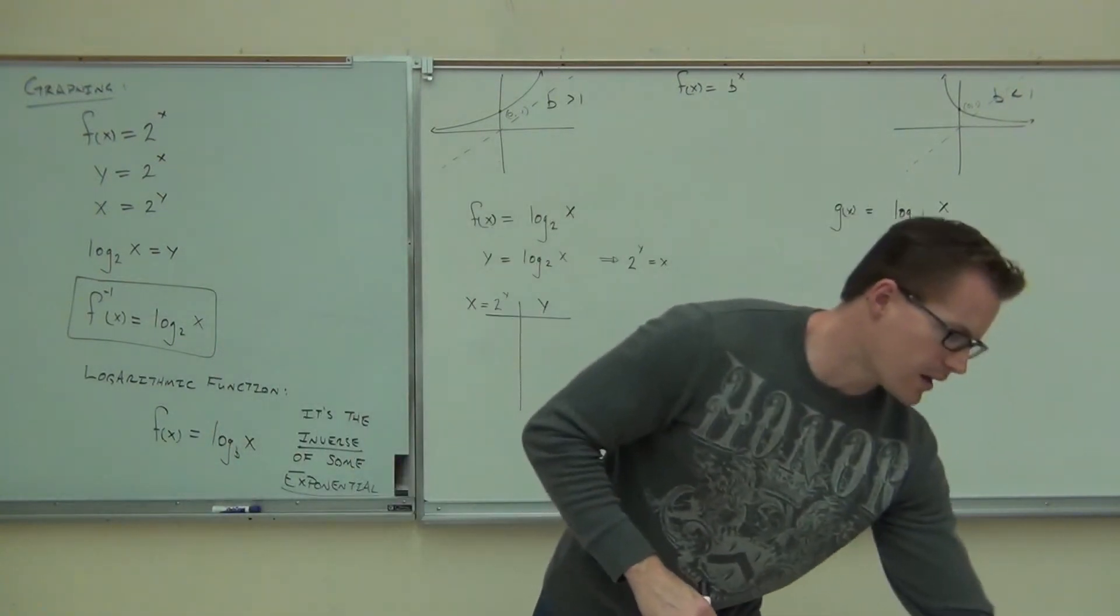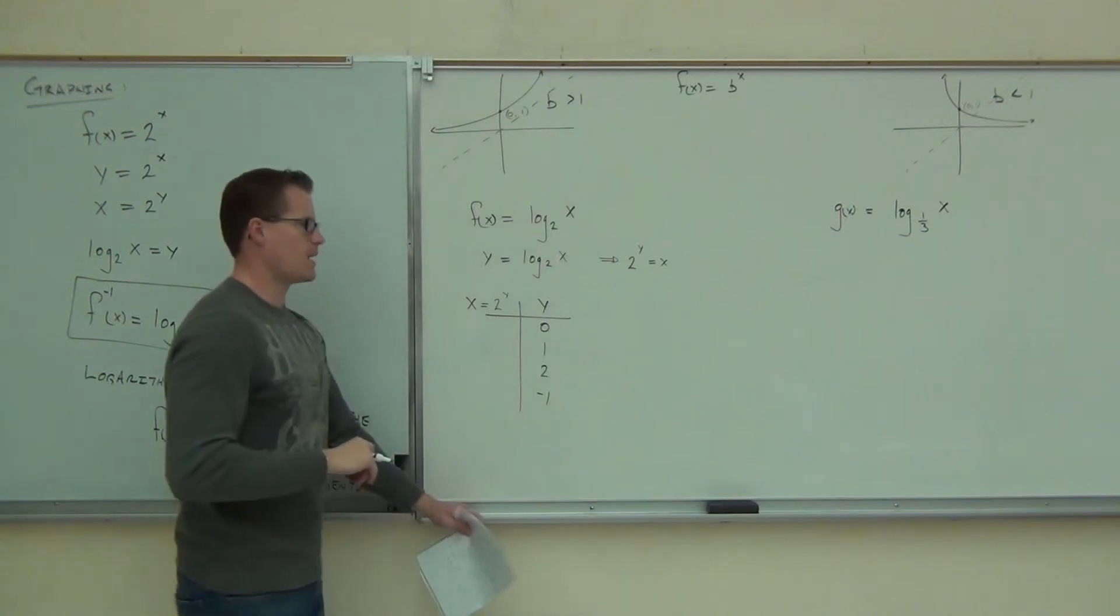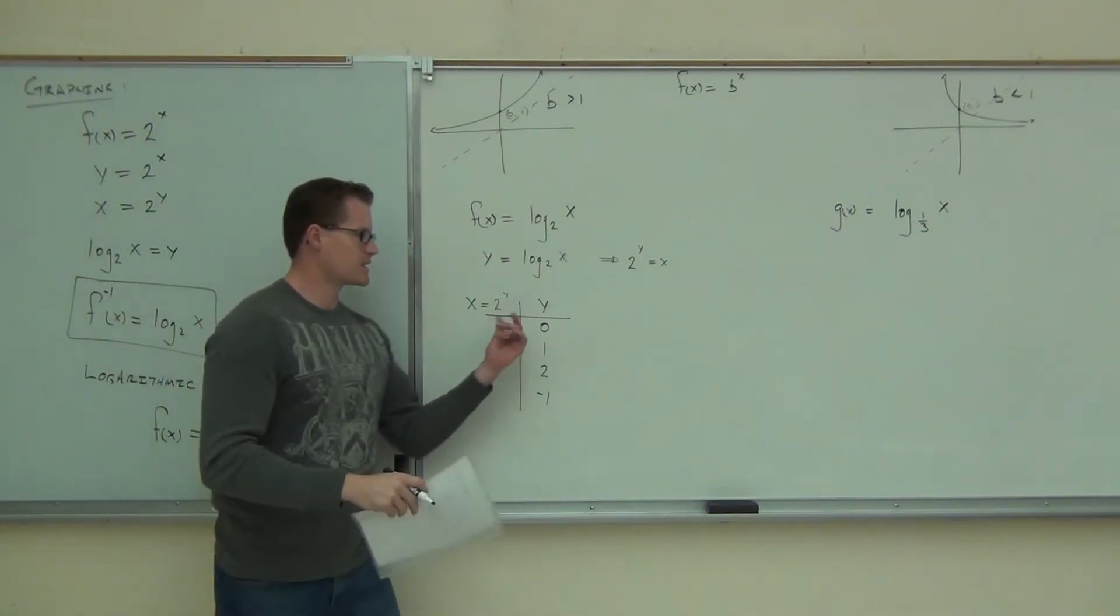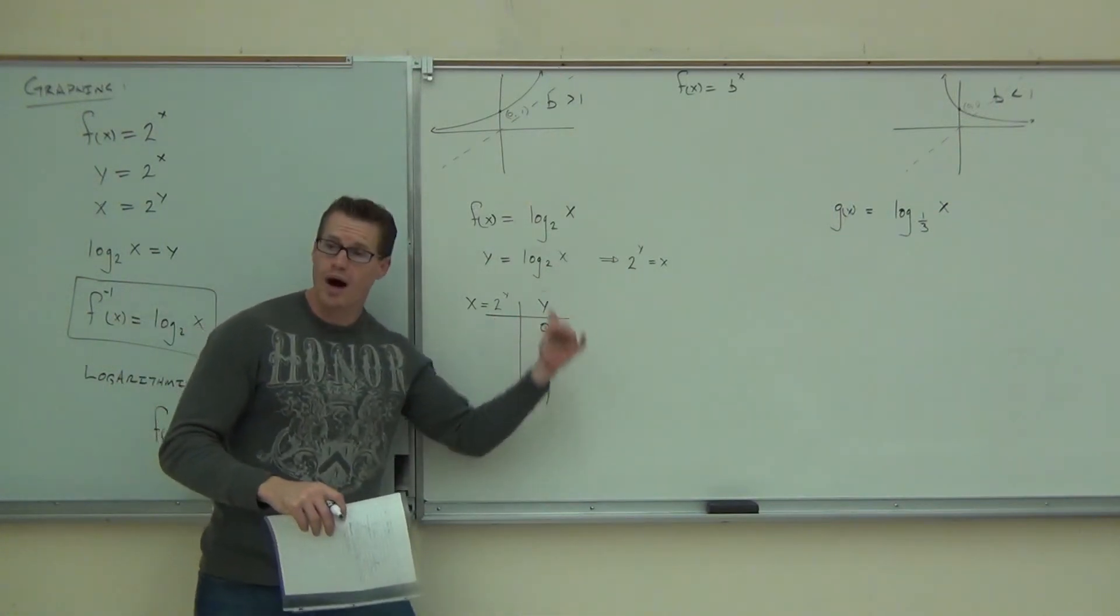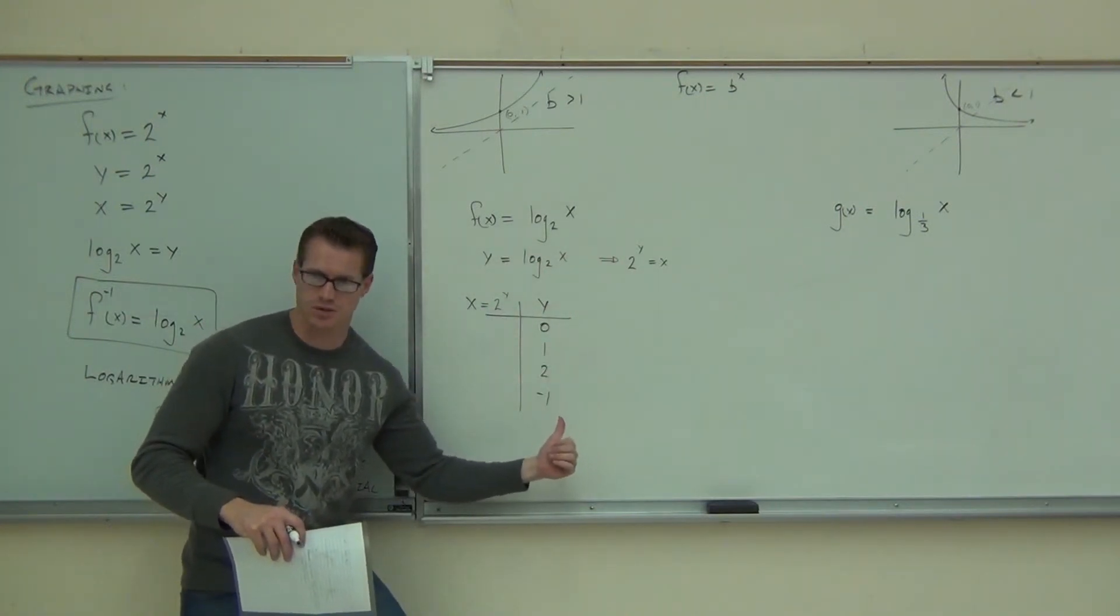So, with my y's, I want to check for 0, 1, 2, and negative 1. We'll see what happens there. So, notice that instead of plugging in my x's, I am plugging in y's first. I wrote it as an exponential, and I'm plugging in y's over here to get the picture of this graph.